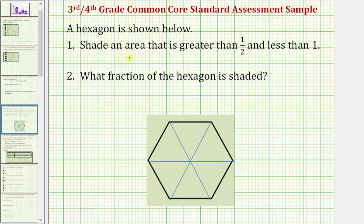For number one, we're asked to shade an area that is greater than one-half and less than one. So the entire hexagon represents one. We want to shade enough pieces so that we have a model for a fraction that's greater than one-half and less than one.